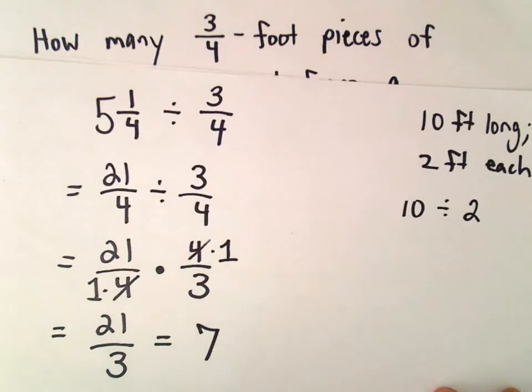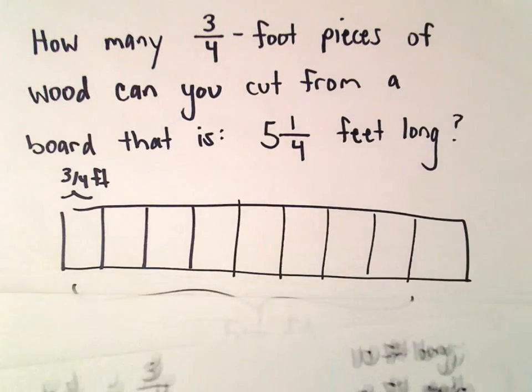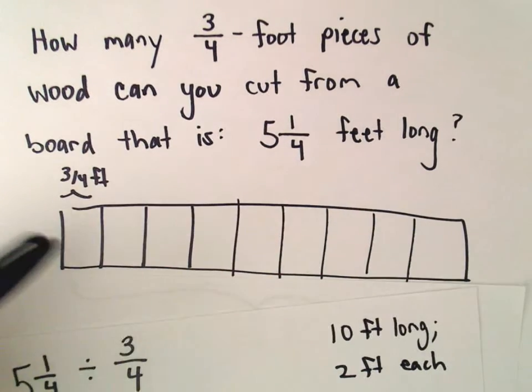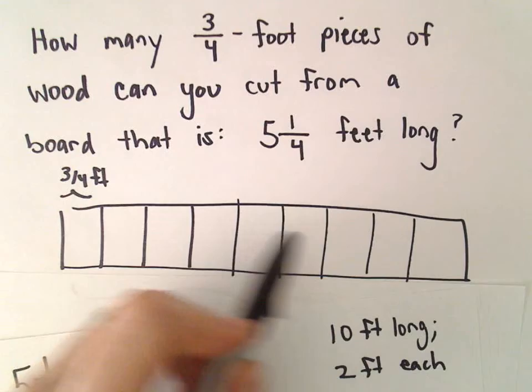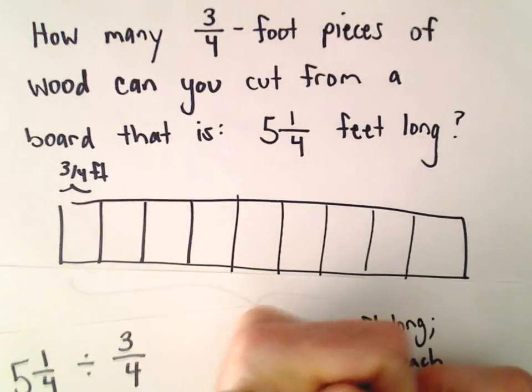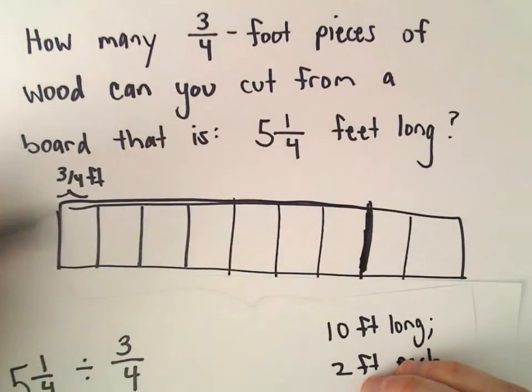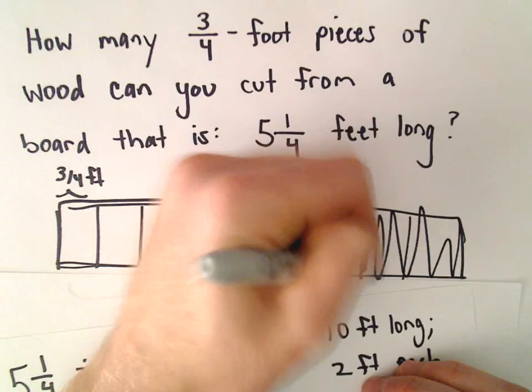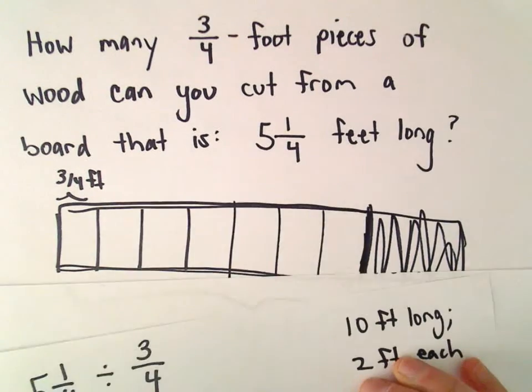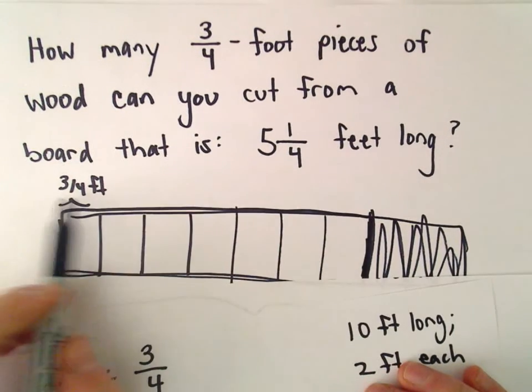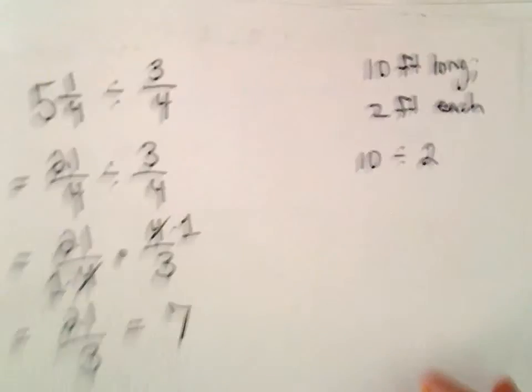So it says, actually, if we chop up this piece of wood, this long piece of wood, we should get exactly one, two, three, four, five, six, seven. So I've got too many parts. So it says you would get exactly seven little planks of wood that are three-fourths of a foot each.